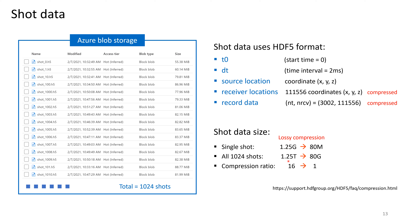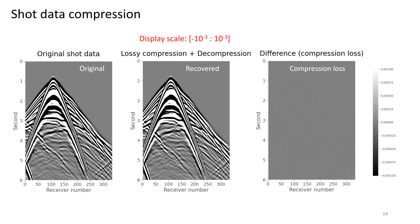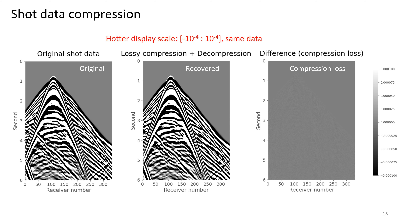The original storage size of 1,000 shots is 1.25 TB, but it is reduced to 80 GB after compression, dramatically reducing the data I/O traffic. Users can also use other data formats such as SEGY. We want to make sure our lossy compression does not impact our FWI result. The original shot data looks the same as the recovered data, which is first compressed and then decompressed. The compression loss is minimal. Even in a display that's 10 times hotter, we don't see coherent signals in the compression loss, so we are happy with our lossy compression which does not remove important information.